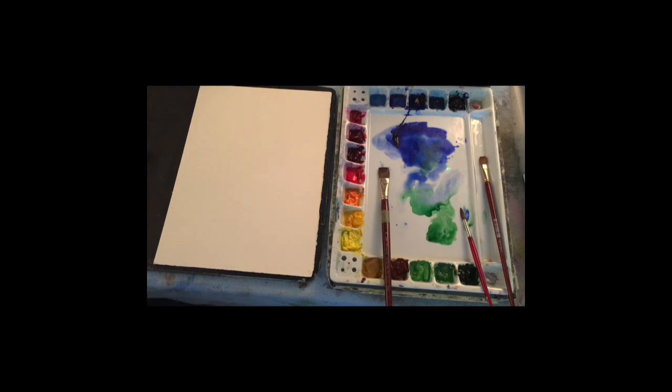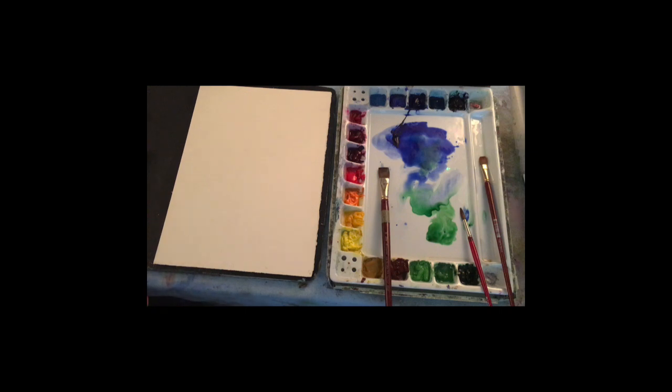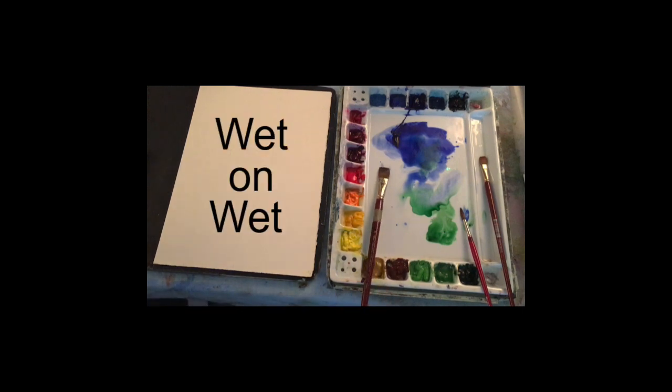The question you should really ask yourself is where is the water? Is the water on the palette? Is the water in the brush? Or is the water on the paper? I'm going to show you four different ways to control water. The first technique is wet-on-wet.